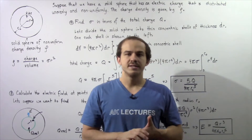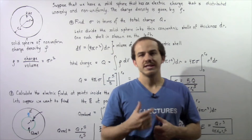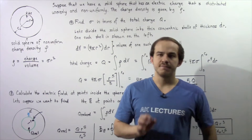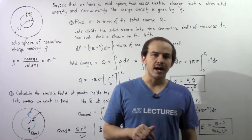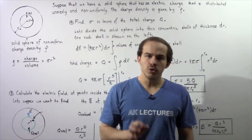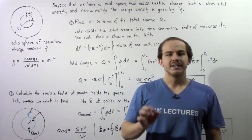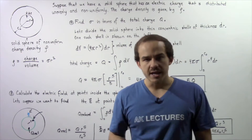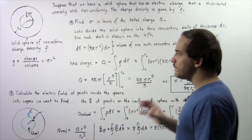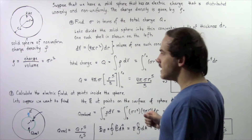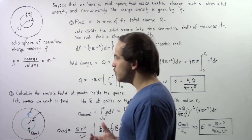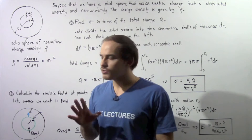Let's continue solving examples using Gauss's law. In the previous lecture we found the electric field inside and outside a solid sphere with uniform and continuous charge density. Now we're going to determine the electric field inside a solid sphere of non-uniform charge density using Gauss's law.